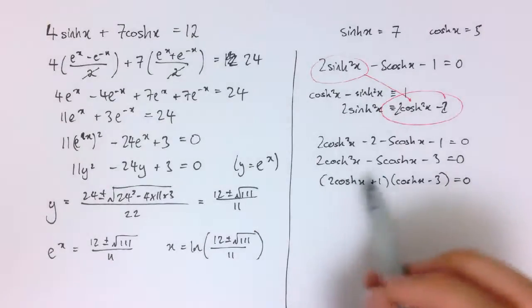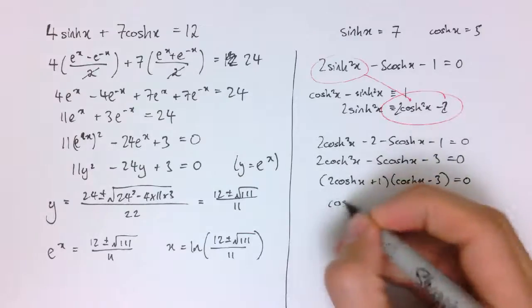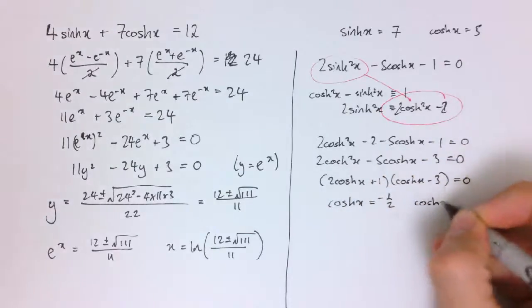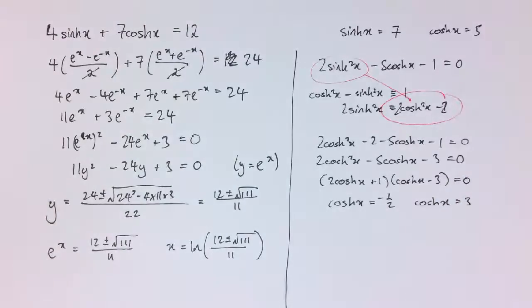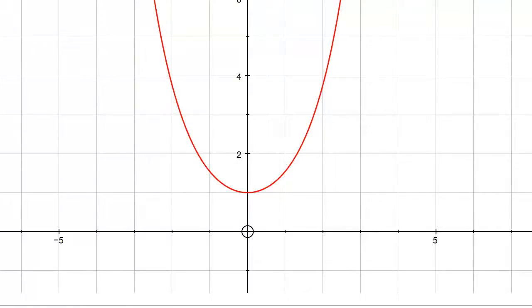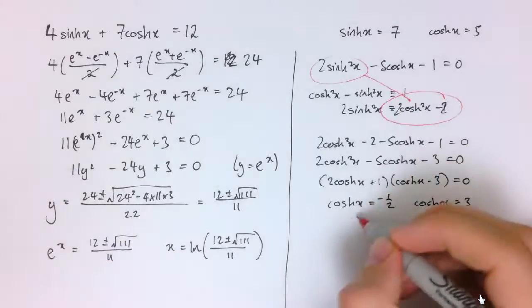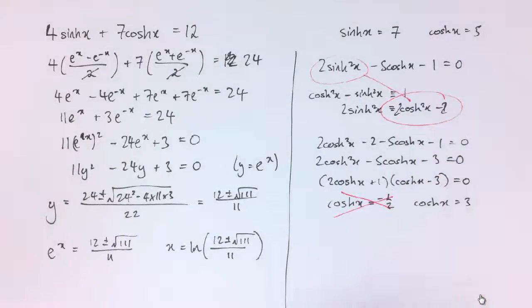So essentially I get two solutions for cosh(x) here. I've either got cosh(x) equals minus 1/2 or cosh(x) equals 3. But if you think back to the definition of cosh(x) or think about the graph here, this is cosh(x) and cosh(x) is never smaller than 1. So actually the solution here, we've got cosh(x) equals minus 1/2 won't have any solutions.